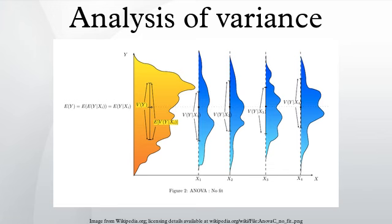A common use of the method is the analysis of experimental data or the development of models. The method has some advantages over correlation: not all of the data must be numeric and one result of the method is a judgment in the confidence in an explanatory relationship.